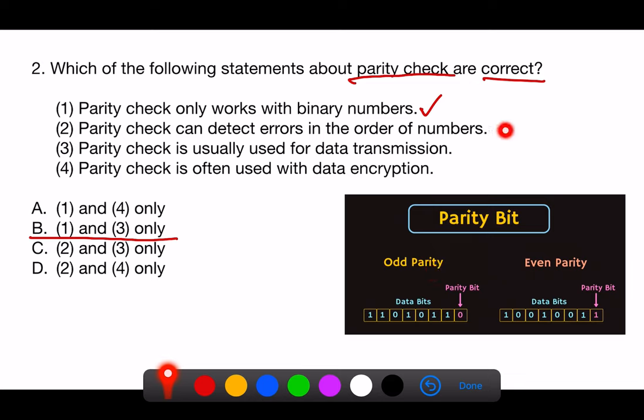2. Parity check can detect errors in the order of numbers. Incorrect. Parity checks cannot detect errors in the order of numbers. They are only capable of detecting single-bit errors within the binary data. If 2 bits were to swap places, a simple parity check would not detect this.